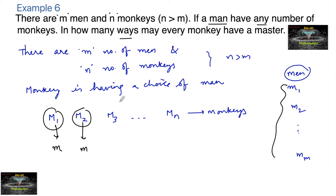Because it's given that a man can have any number of monkeys, the same man can be chosen multiple times. So it's a repetition - any number of times can be taken. Monkey 3 is also having a choice of m men, and so on. Monkey n is also having m men.